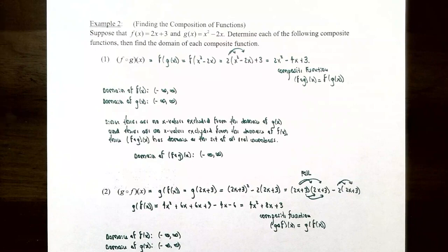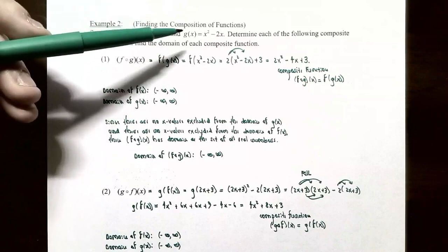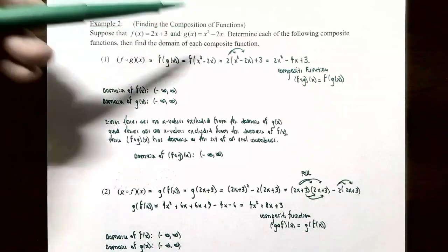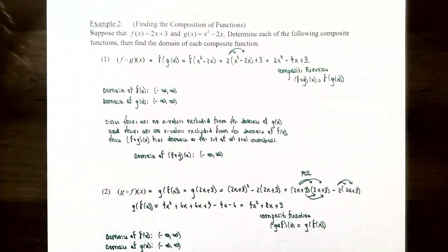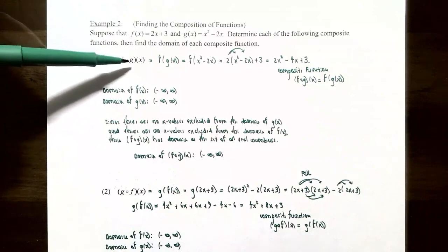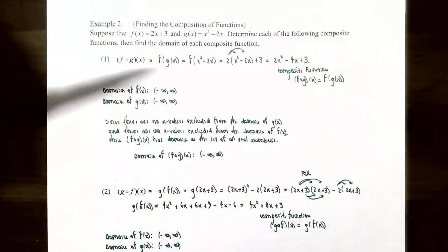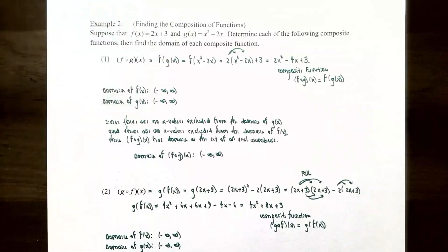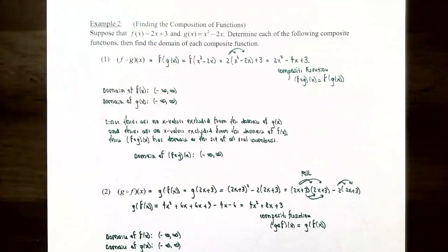Example 2: finding the composition of functions. Suppose f(x) = 2x + 3 (a linear function) and g(x) = x² − 2x (a quadratic function). We will determine each composite function and its domain. For number one, we find f ∘ g, or f of g(x). So f is the outside function and g is the inside. We take g(x) = x² − 2x and substitute it into f. So f of (x² − 2x) = 2(x² − 2x) + 3, which simplifies to 2x² − 4x + 3. This is the composite function f of g(x).